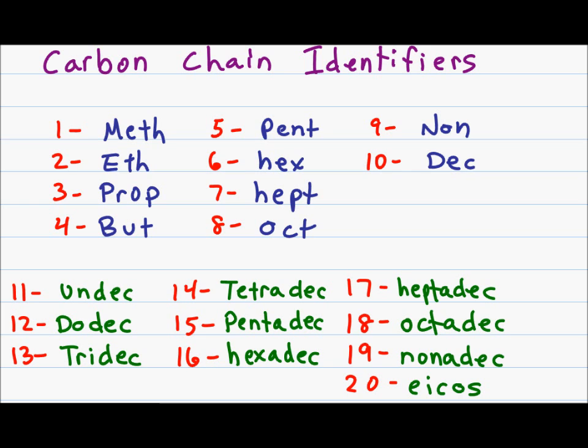For numbering chains of eleven through twenty, recognize that the name is made of a number plus ten. For example, undec comes from un or uno meaning one and dec which is ten. So eleven we have undec, twelve is dodec, thirteen tridec, fourteen tetradec, fifteen through nineteen start to look like five through nine. That's pentadec, sixteen hexadec, seventeen heptadec, eighteen octadec, nineteen nonadec, and twenty is a new word eicos.